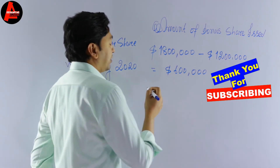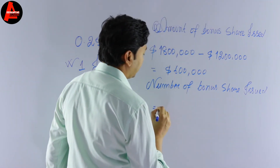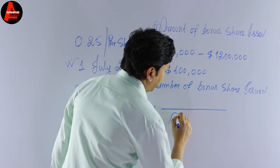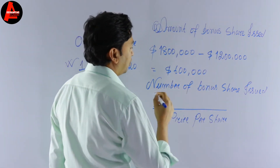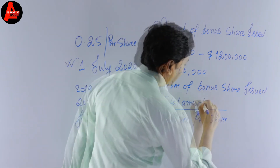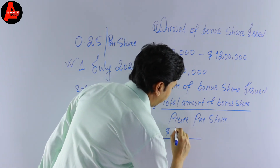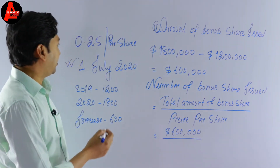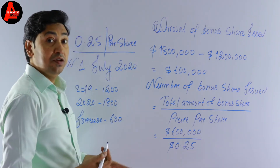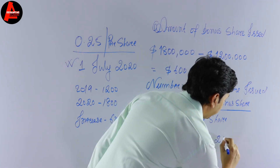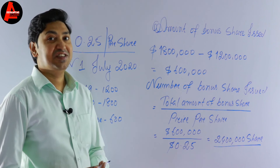To find the number of bonus shares, we divide the total amount of bonus shares by the price per share. We know the total amount of bonus shares is $600,000, and the price per share is $0.25. So: number of bonus shares issued = $600,000 ÷ $0.25 = 2,400,000 shares. This is the number of bonus shares the company issued.